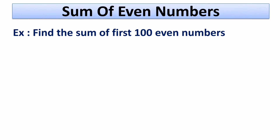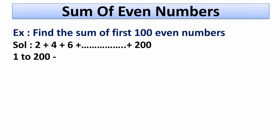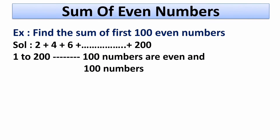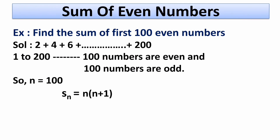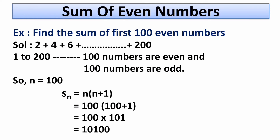The next problem is the sum of first 100 even numbers. To find 100 even numbers we have to consider numbers from 2 to 200. From 1 to 200 we have 100 even and 100 odd numbers, so here the value of n is 100. Sn equals 100 times (100 plus 1), that is 100 multiplied by 101, equals 10,100. So when we add the first 100 even numbers we get 10,100.